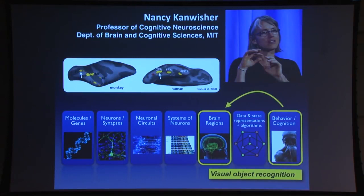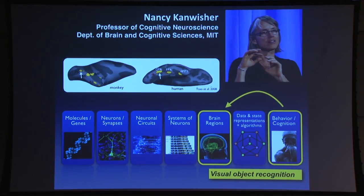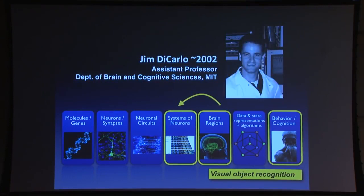How does the brain help us understand how to build a better system? First we need to know where to look in the brain. Work from Nancy Kanwisher and others — using tools like brain imaging in humans, and with colleagues like Doris Tsao — helped highlight where the parts of the brain are involved in processing: faces, general objects, bodies, and places. This work highlighting the brain regions gives us a guidepost: don't look over the whole brain, but focus on certain regions involved.